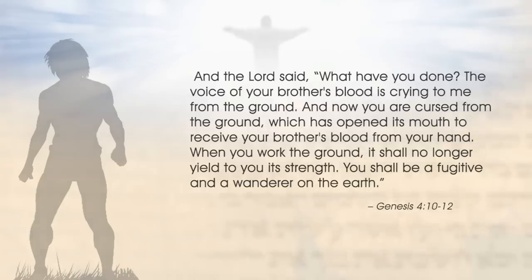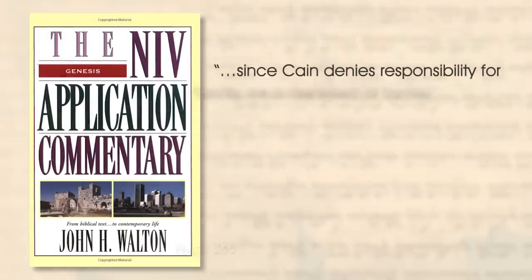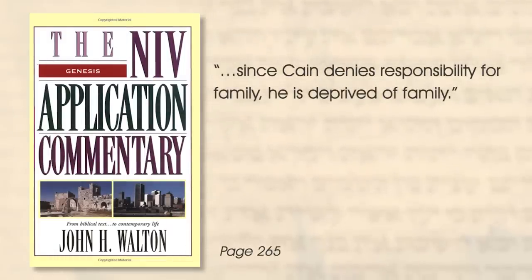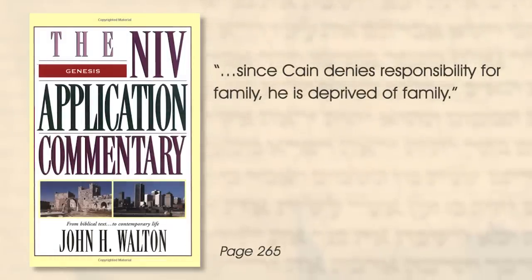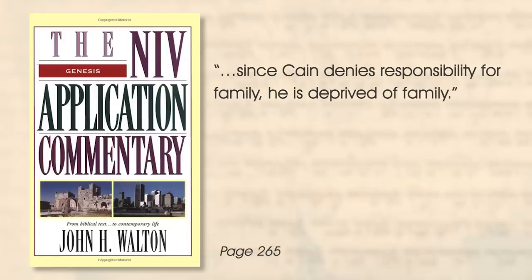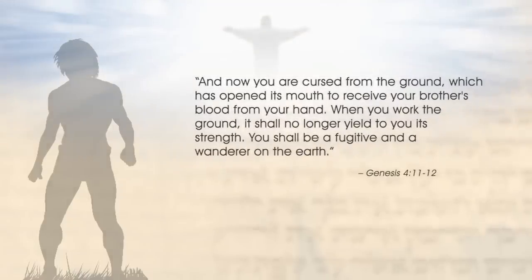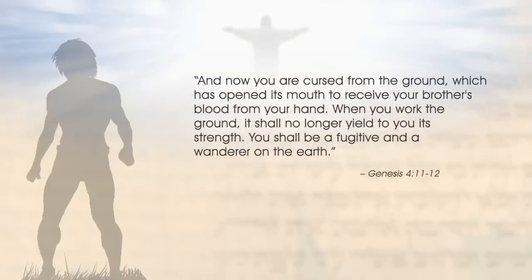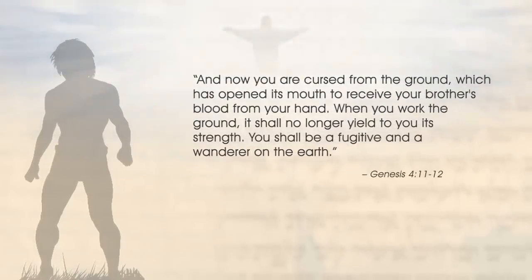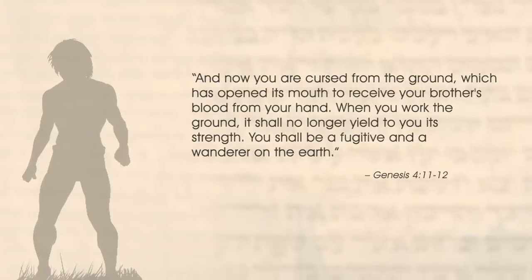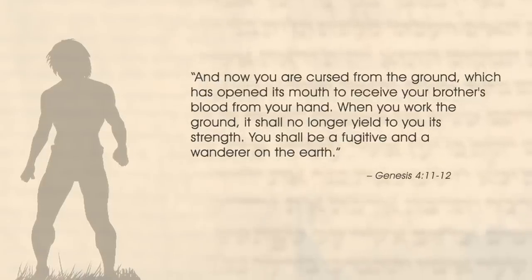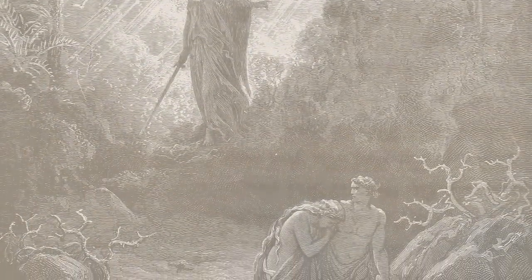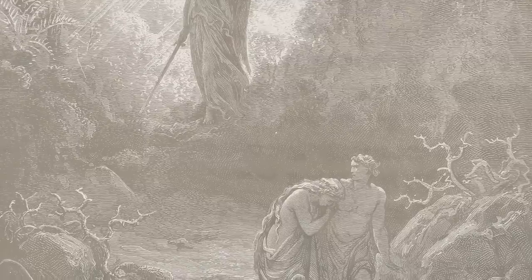'You shall be a fugitive and a wanderer on the earth.' John Walton says, 'Since Cain denies responsibility for family, he is deprived of family.' Cain has fallen further than his parents have, taking humanity one step further away from God. Cain is placed under a curse, which has the same meaning as it does in Genesis 3, meaning God has removed his protection and blessing over him. He is also exiled like his parents were. Adam and Eve were exiled from the sacred space of the garden, but Cain seems to be exiled even further than his parents were.